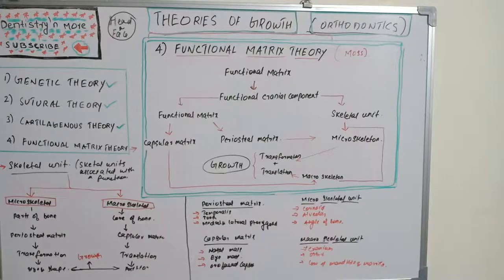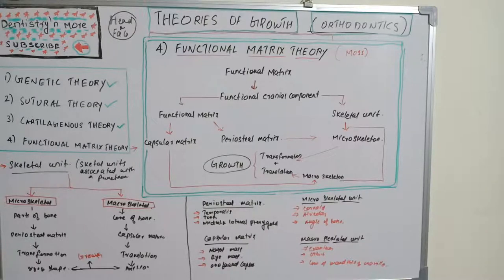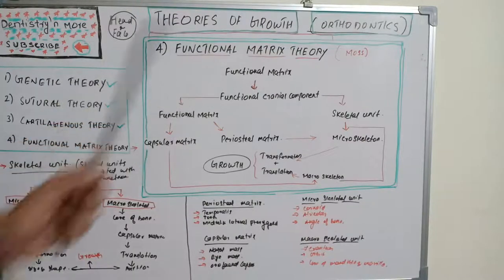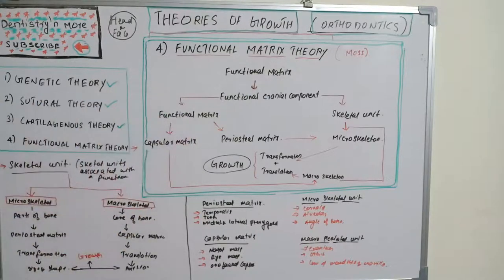According to this theory, the growth potential actually lies outside the bone — in the functional space or functional matrix — where the events are happening, rather than in the bone itself. That is the most accepted theory: functional matrix theory, with its functional cranial component, functional matrix, skeletal units, capsular matrices, periosteal matrices, and their microskeletal and macroskeletal units.